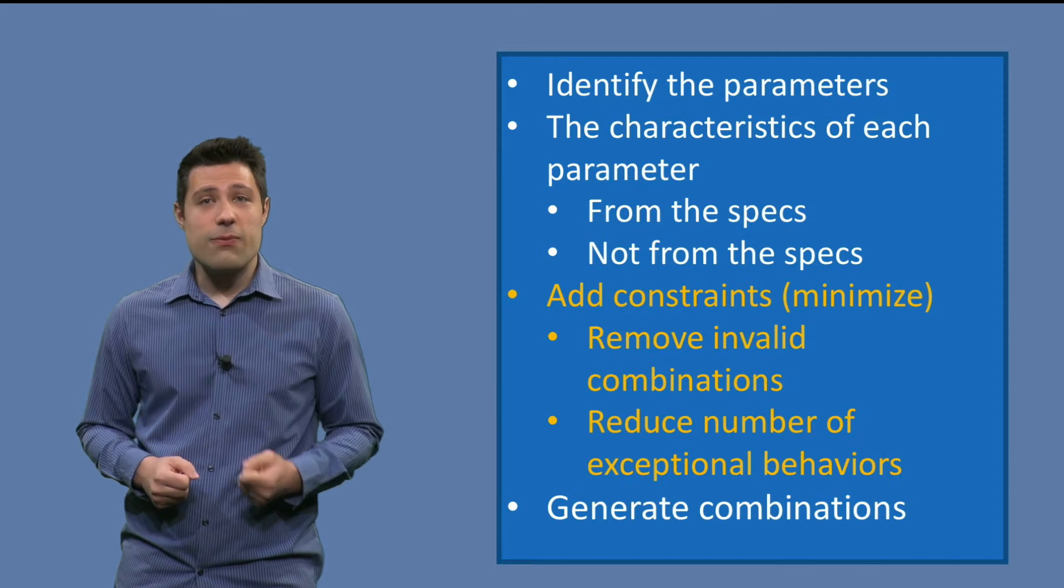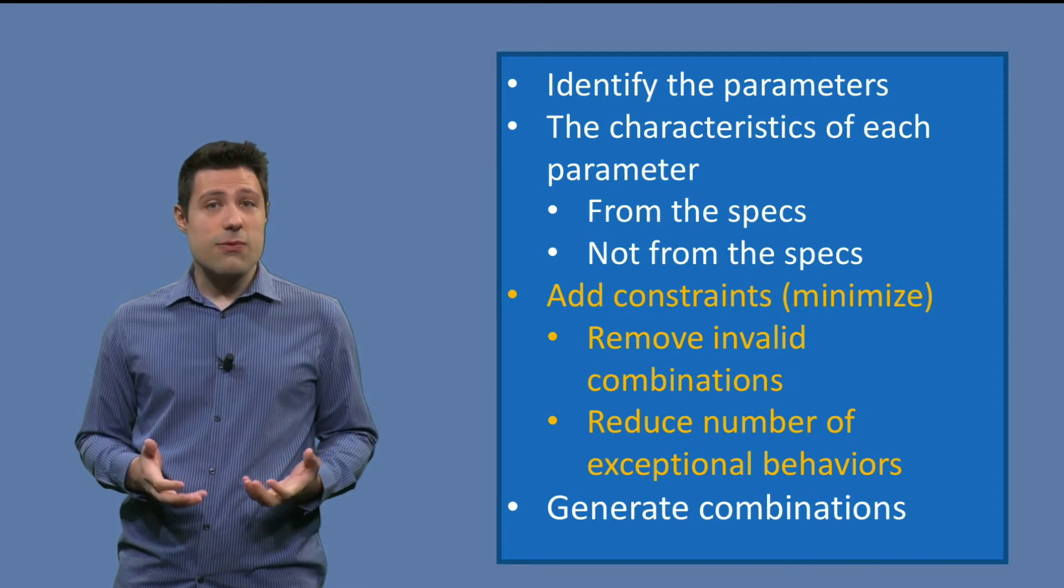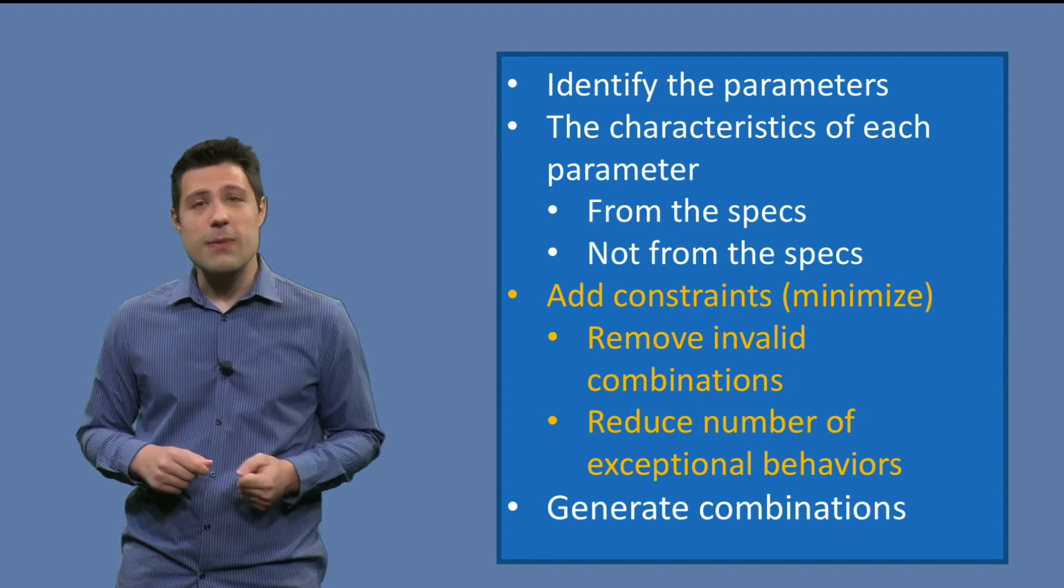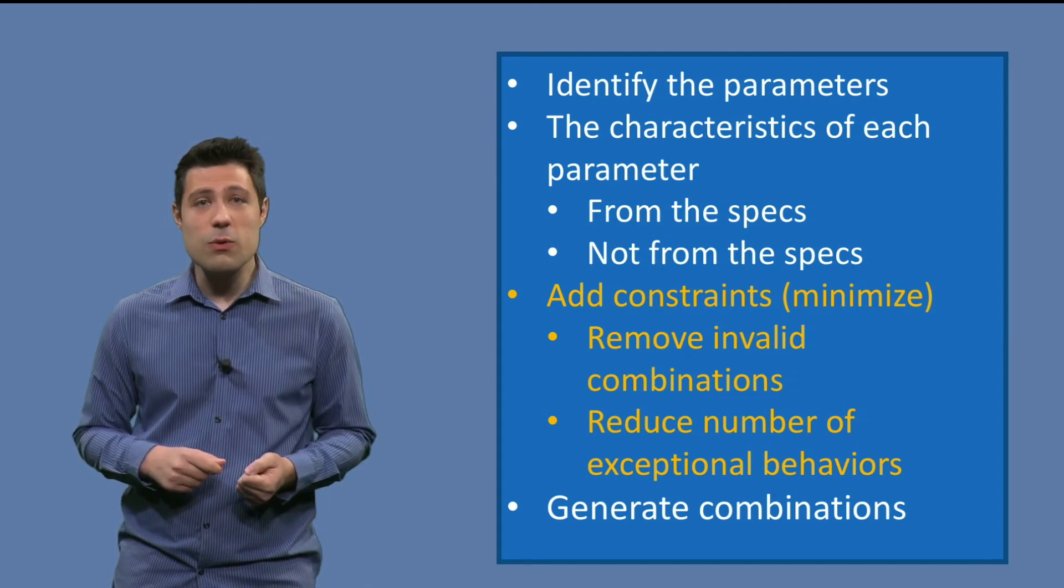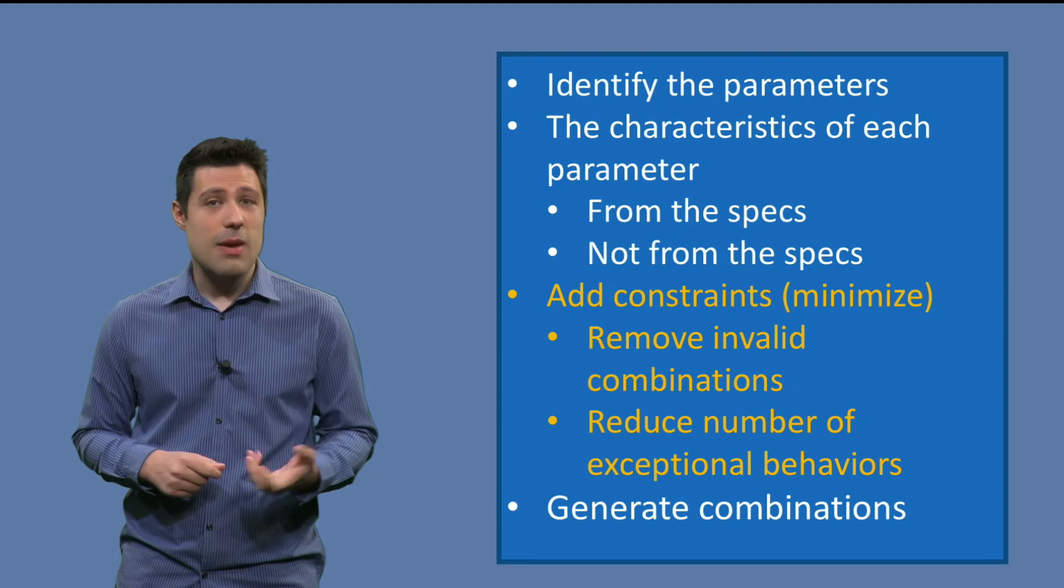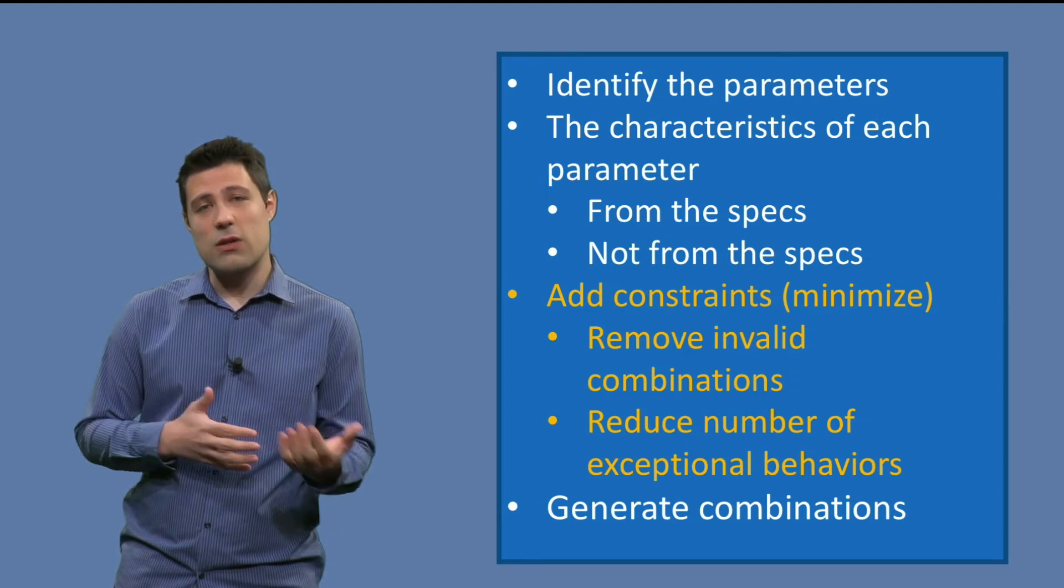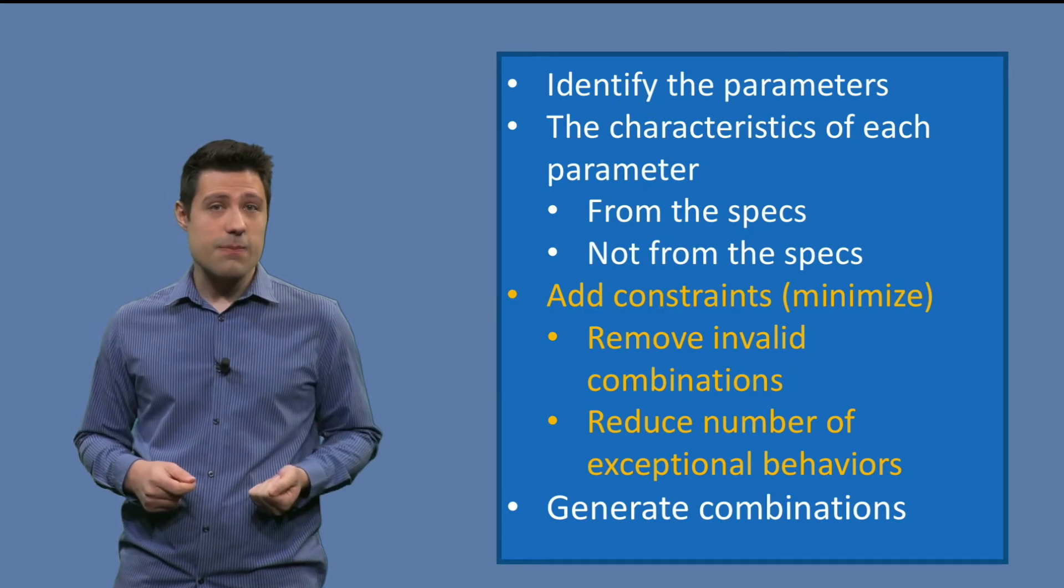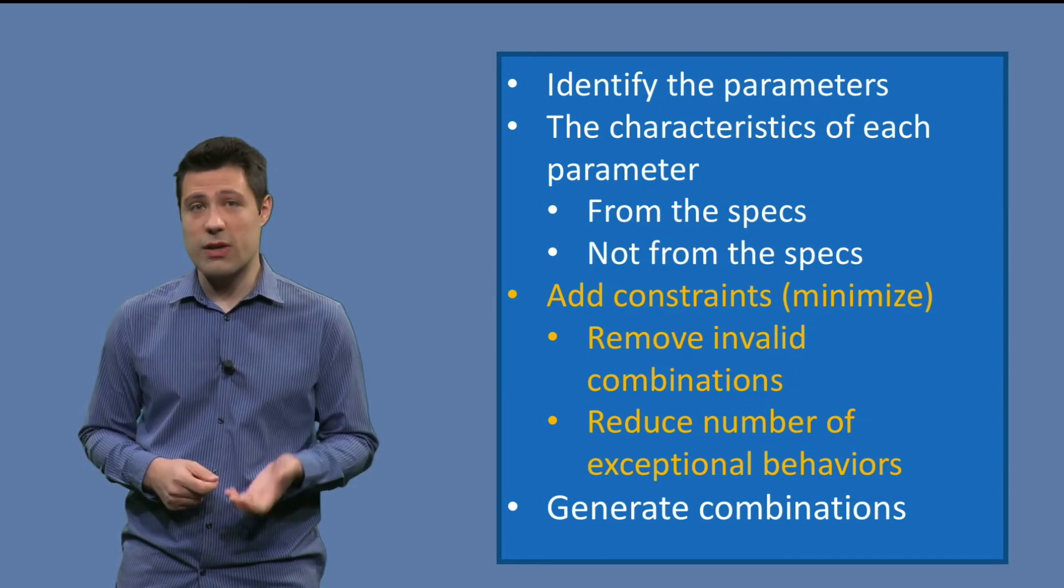So what we do before is to minimize the number of combinations by adding constraints to the parameters. For example, depending on the problem, we are able to remove invalid combinations. Maybe some characteristic can't be mixed with another characteristic. Or we can isolate exceptional behavior, test it just once and avoid all the combinations with it.